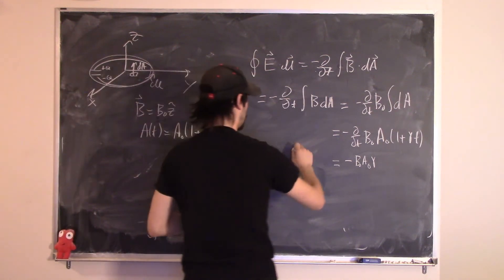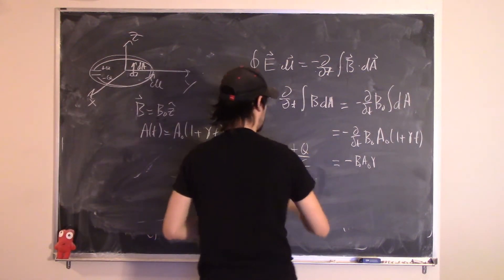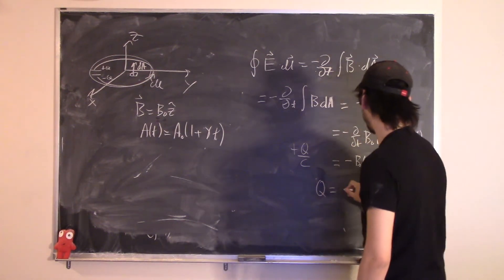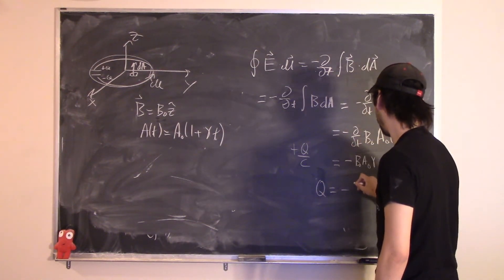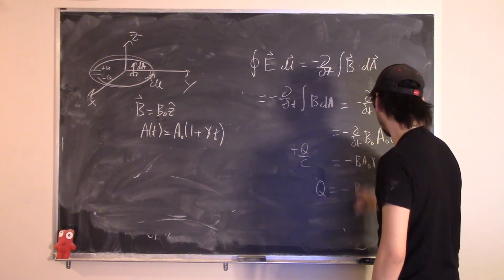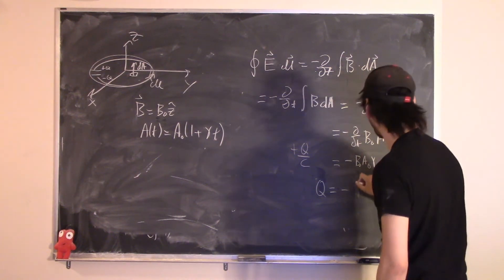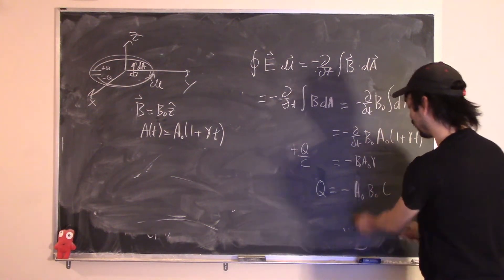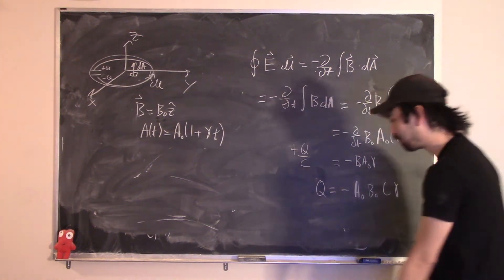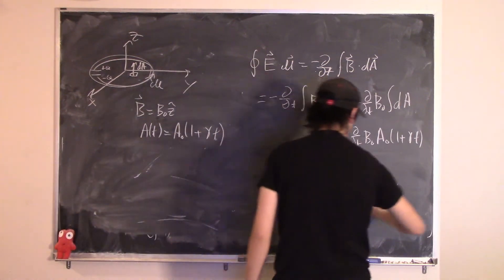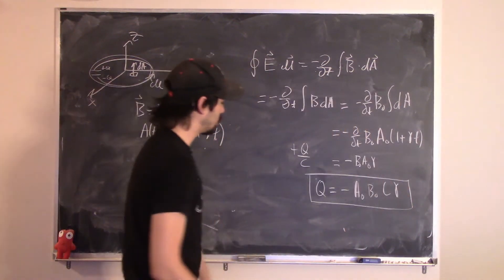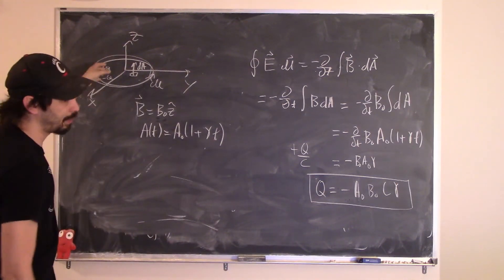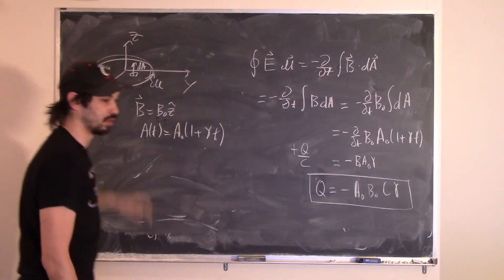For the left-hand side: with dA pointing up, dL curls in this direction. Going around the loop I see the positive charge first. So the integral of E dot dL gives plus Q divided by C. Therefore Q equals minus A0 B0 C gamma.